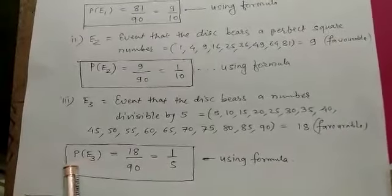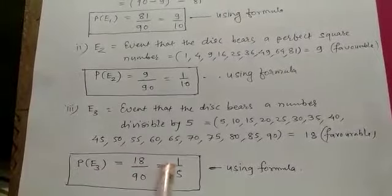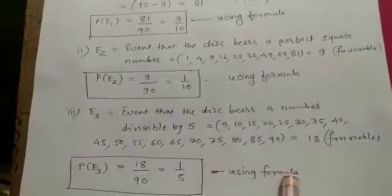So by using the formula, P of E3 equals 18 by 90, that is equal to 1 by 5 using formula.